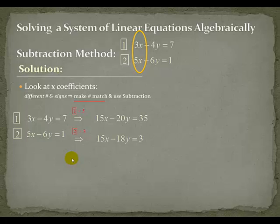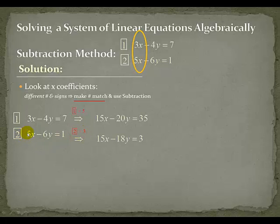When we do that, we of course have to do it to the entire equation. So 5 times 3x gives 15x, 5 times negative 4y gives negative 20y, and 5 times 7 is 35. Conversely for equation 2, when I multiply through by 3: 3 times 5x is 15x, 3 times negative 6y is negative 18y, and 3 times 1 is 3.